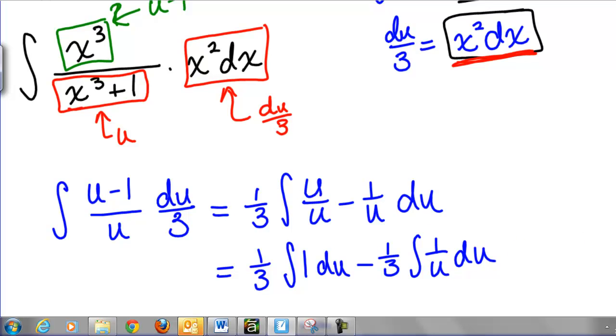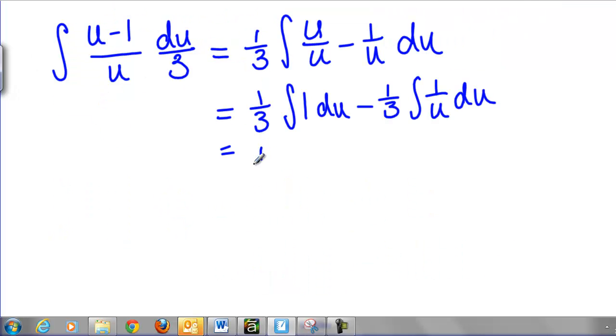Each of these integrals I know how to do. So now we have 1/3 the integral of 1 du. Now this is a good question, is this x or u? Because we have a du here that means we're integrating in terms of u. U is our variable so the integral of 1 is going to be u minus 1/3. Again, the integral of 1 over u is natural log of the absolute value of u plus c.